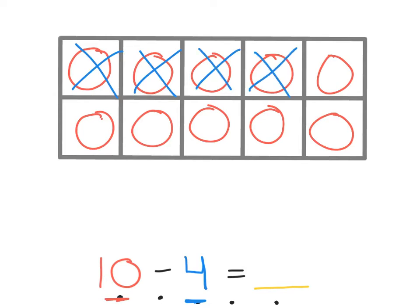And the last step is you're going to count how many you have left for your answer. We have 1, 2, 3, 4, 5, and 6 counters or 6 circles left. And that is our answer.